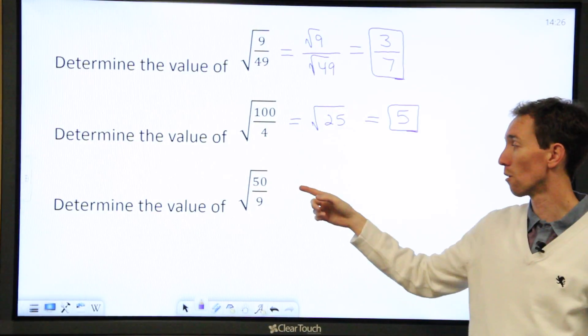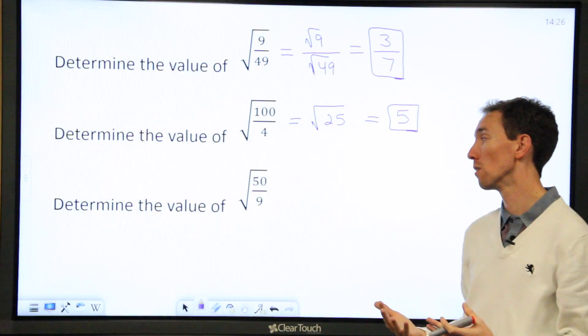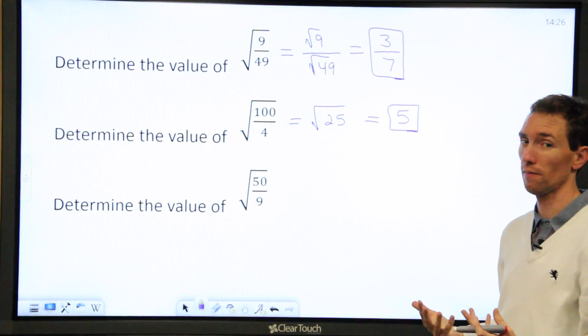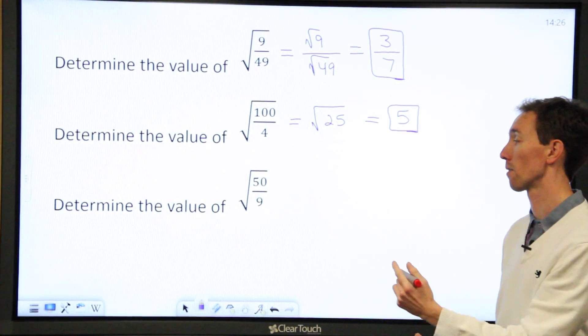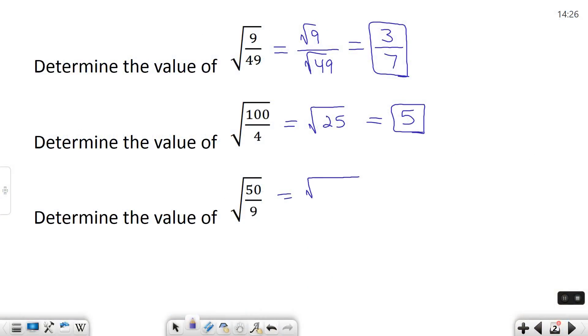What I do also know, though, is that 50 is the same thing as 25 times 2. And one of those numbers is a perfect square, so I'm going to kind of break it apart a little bit and write it as this. All I'm doing is representing 50 in a different way.